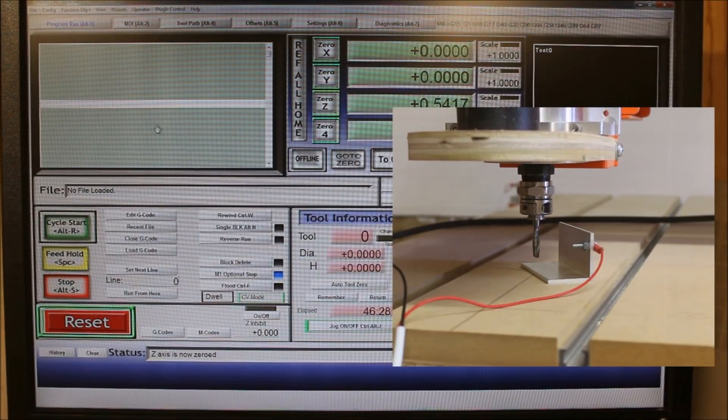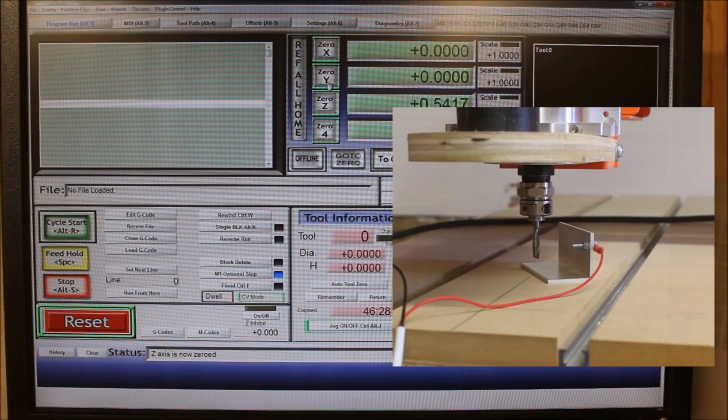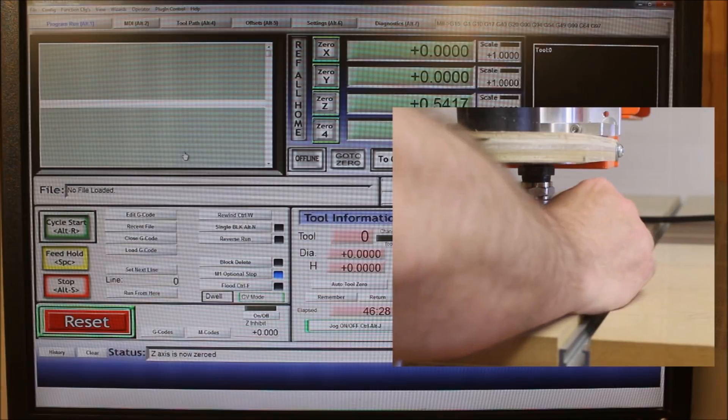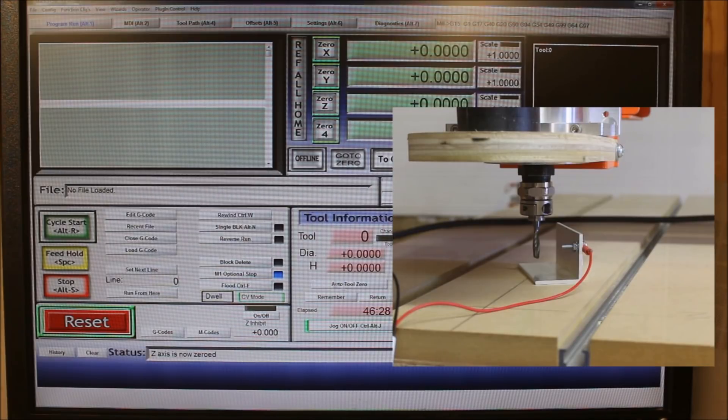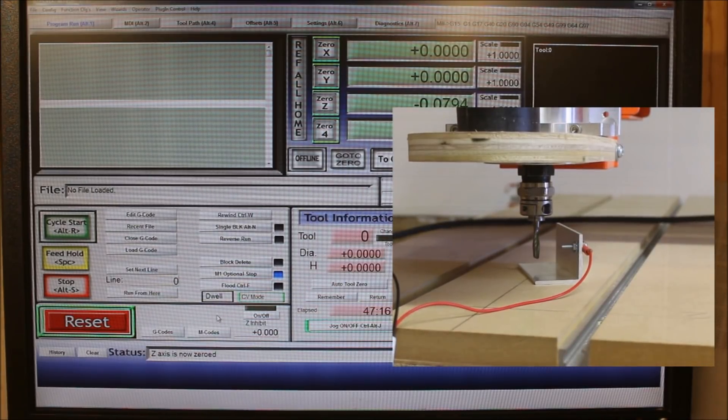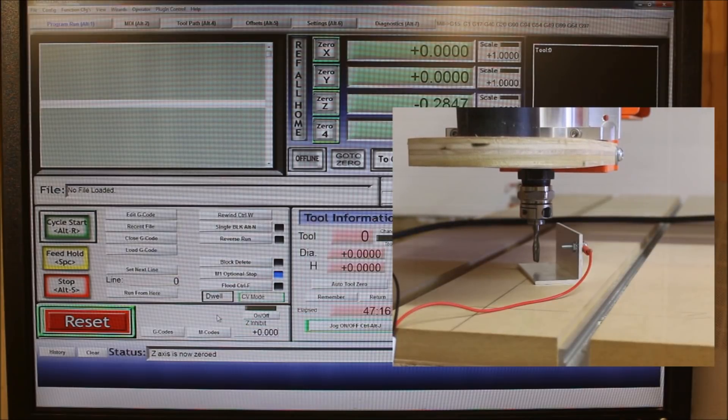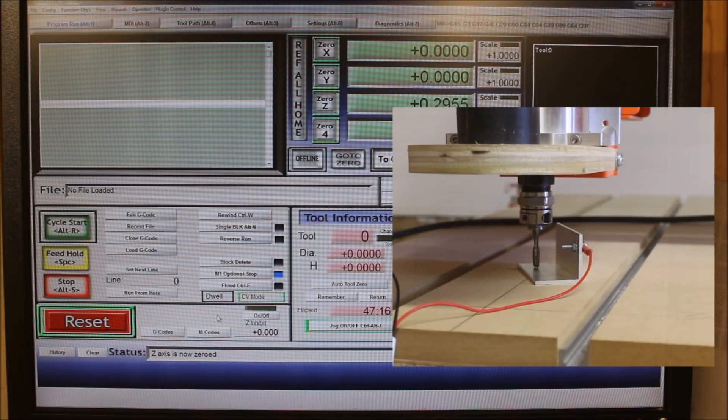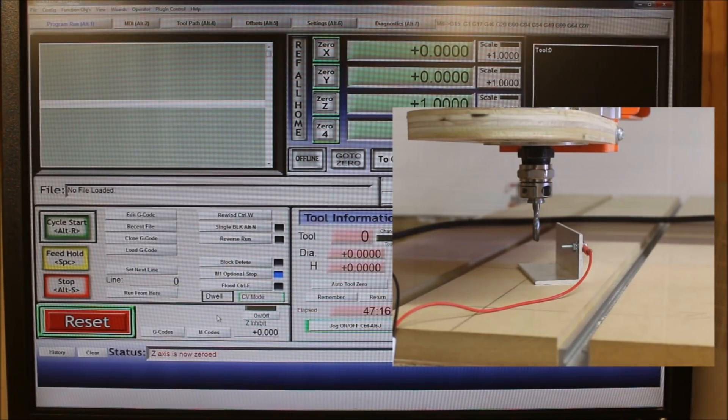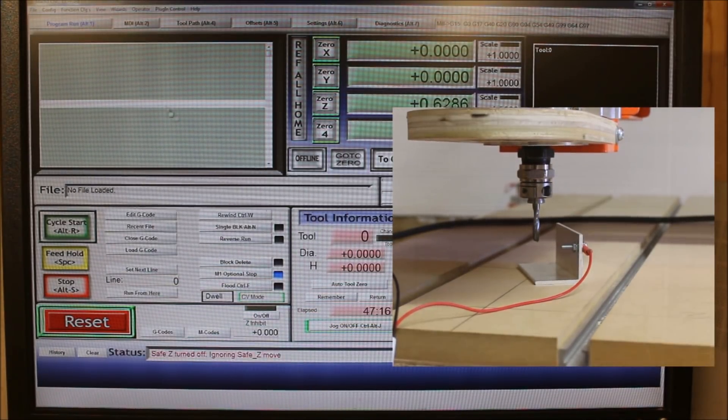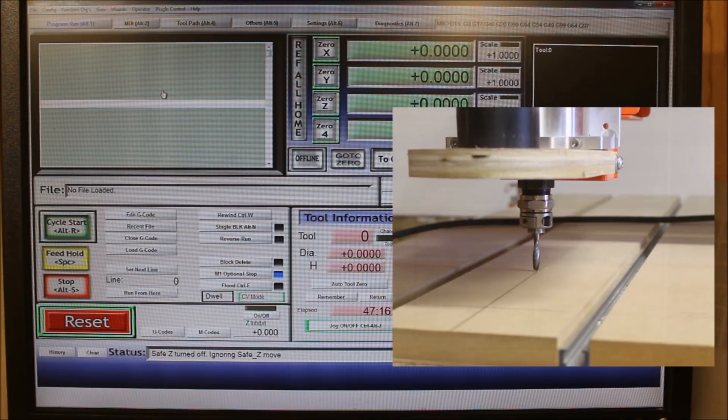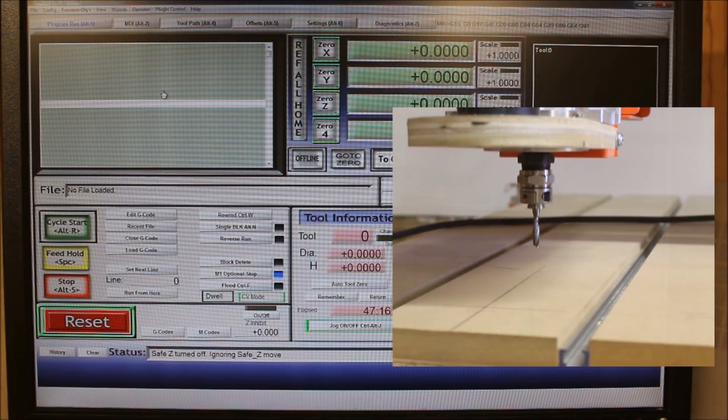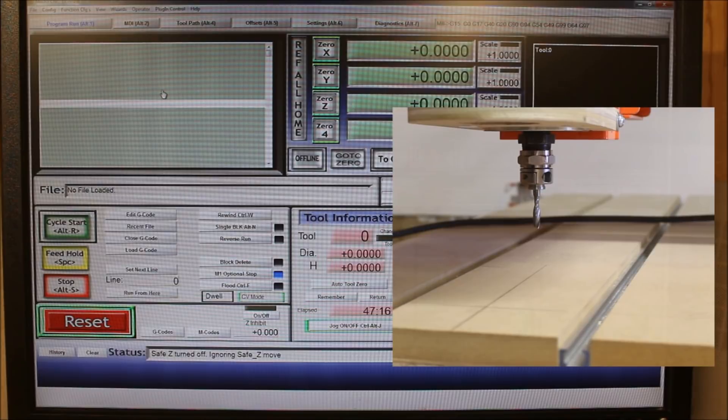Okay, so to get this to work, you just after you've zeroed your X and Y, you set your touch plate up under your bit, you jog it down somewhat close, hit auto tool zero button. You'll see the dwell over here is flashing and it will lower itself until it touches the plate and then it will raise back up to one inch. So then you can move your plate out of the way, it goes to zero and it should be either right on top of your material or right on top of your machine bed, whichever you had your touch plate setting on. So that's all there is to it.